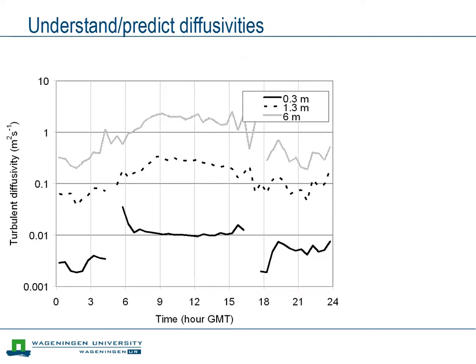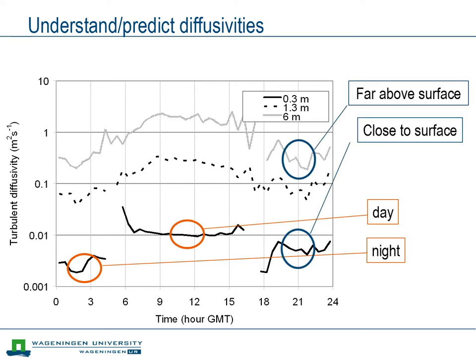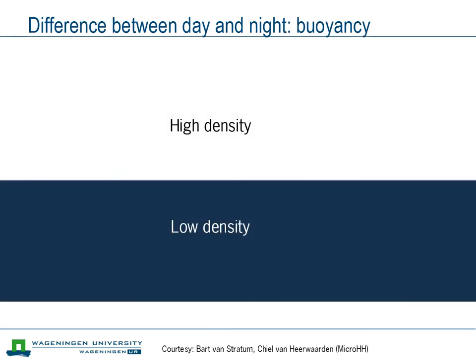Our task is not simple. The graph shows how the observed turbulent diffusivity depends on the time of day — the horizontal axis — and on height above the surface — the three different lines. First, we see that the turbulent diffusivity varies strongly between day and night. Furthermore, we see that the diffusivity is smaller close to the surface than further above the surface. We focus our attention first on the difference between day and night.